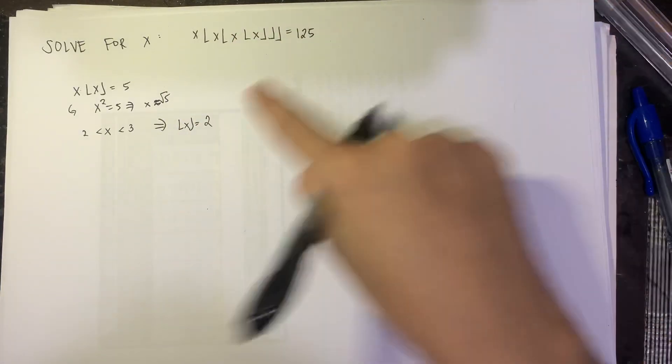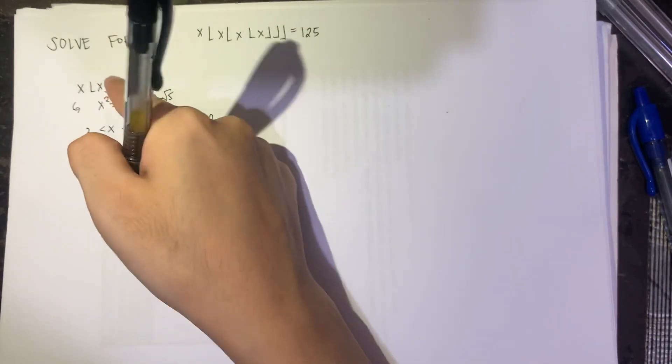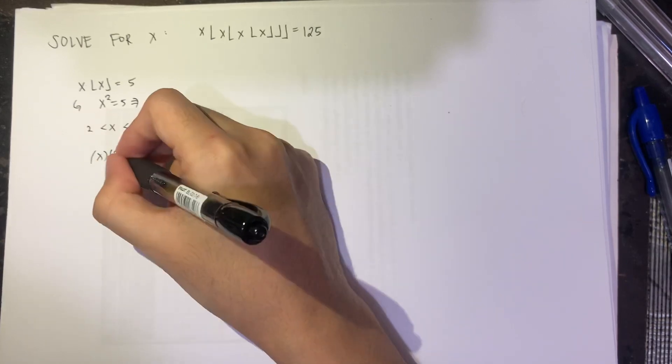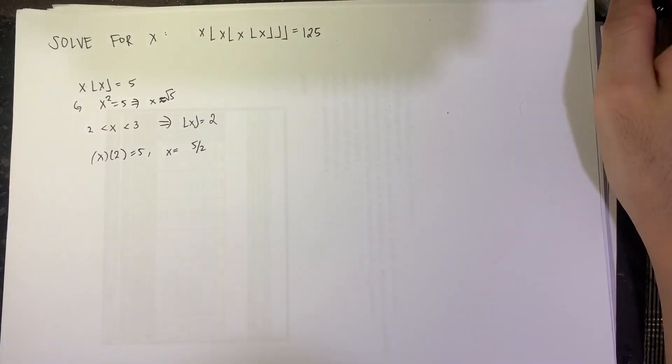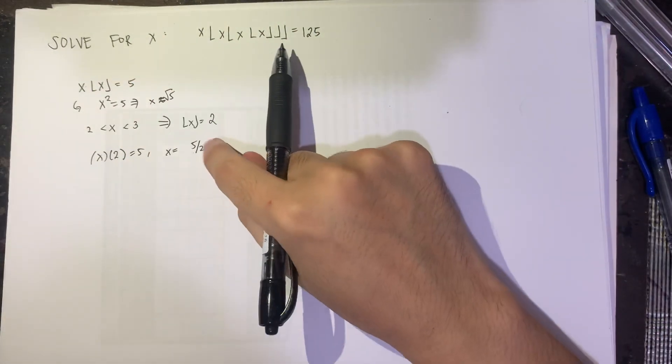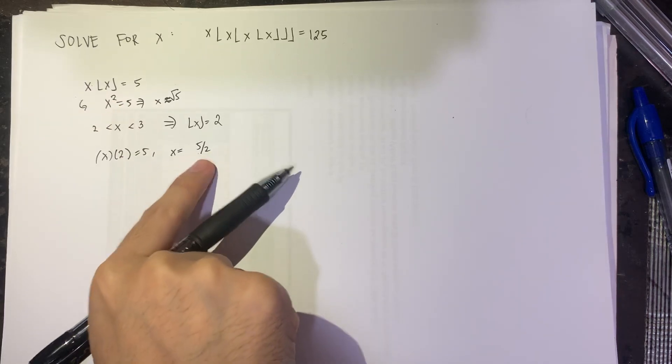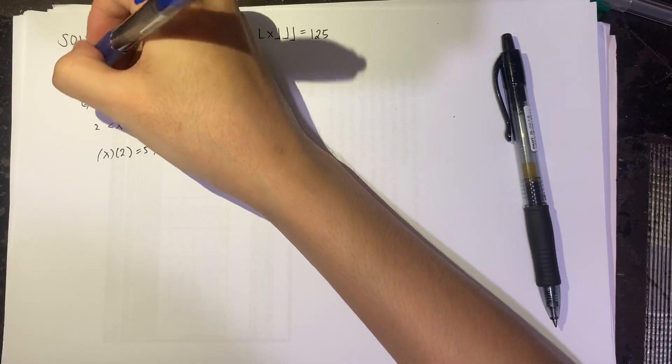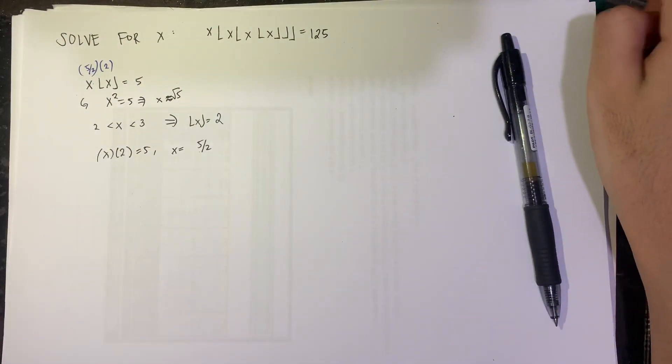So if you plug it in here, x times the floor of x is 2, is equal to 5. So x is equal to 5 halves. And then if we try to substitute it here, just to check, 5 halves times the floor of 5 halves. Floor of 5 halves is 2. So that becomes 5 halves times 2, which obviously is 5.